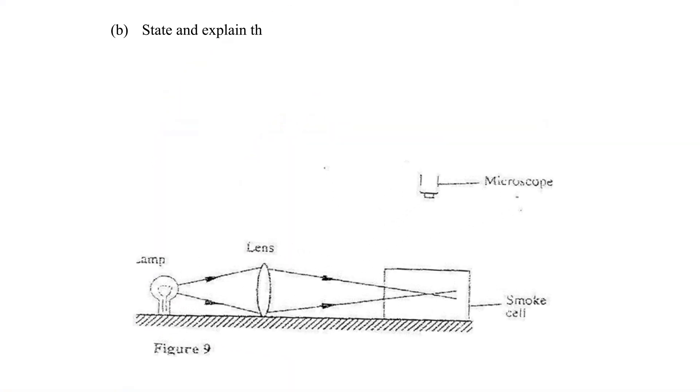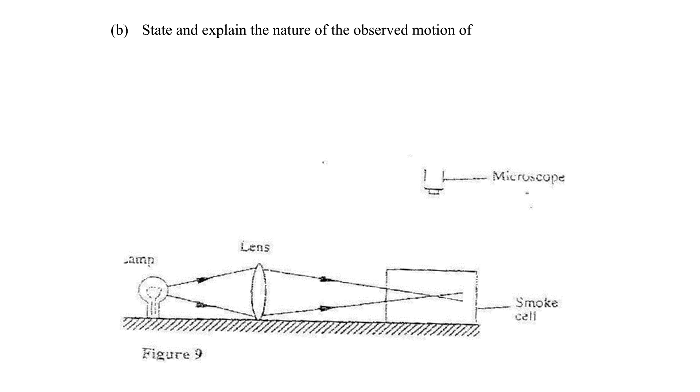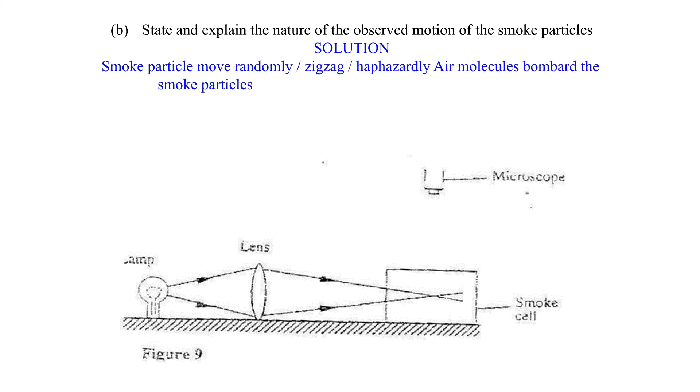Part B: State and explain the nature of the observed motion of the smoke particles. Solution: Smoke particles move randomly or zigzag or haphazardly. Air molecules bombard the smoke particles or knock or hit them. Air molecules are in random motion.